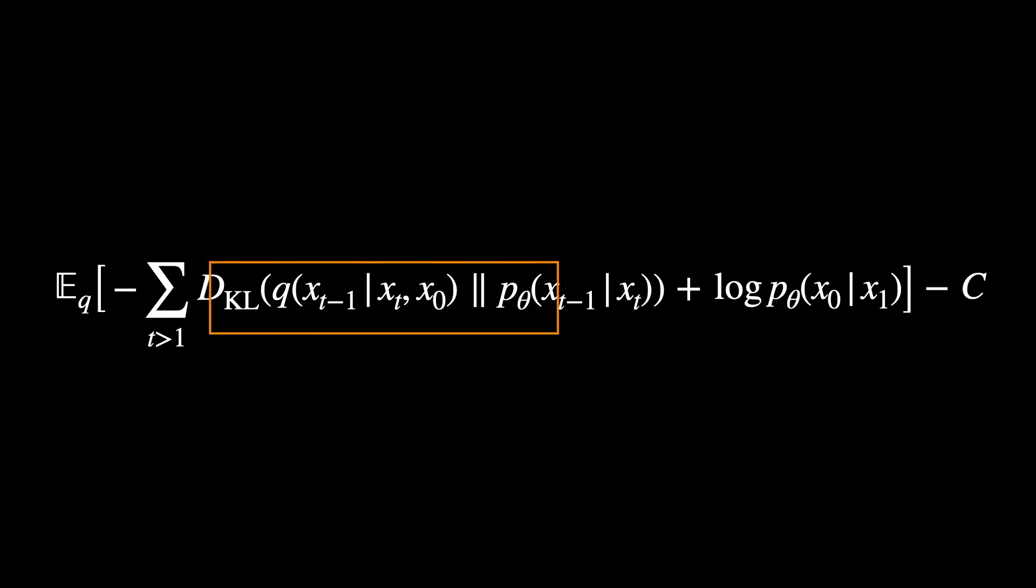One can prove with Bayes' rule that when we treat the original sample as known, like it is during training, these q terms are actually just Gaussians. Since the reverse step is already parameterized as a Gaussian, each KL divergence now is simply comparing two Gaussians, and can be evaluated in closed form.